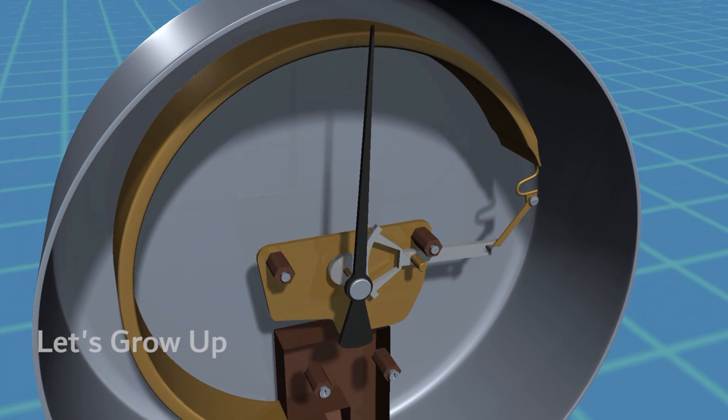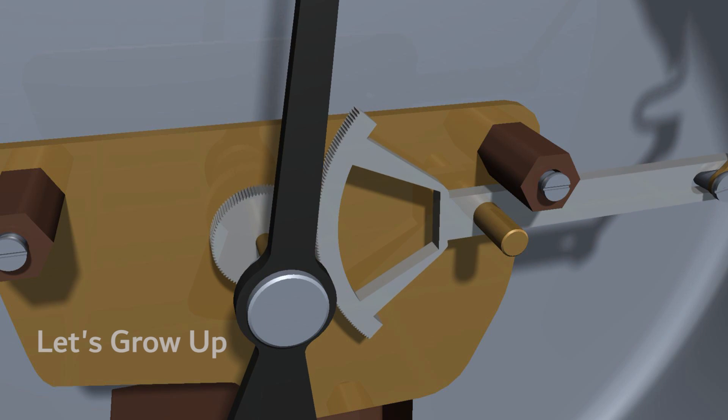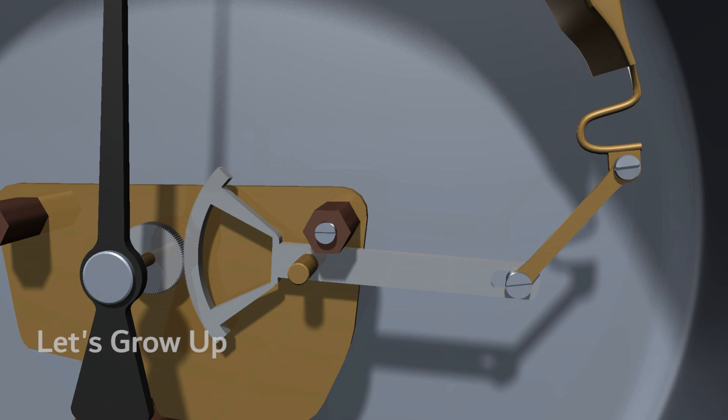As the Borden tube straightens, it causes the tube to change its shape and moves a linkage mechanism connected to a pointer on the gauge's dial.